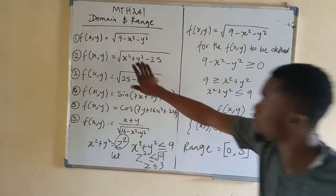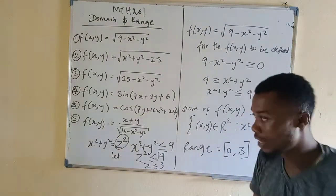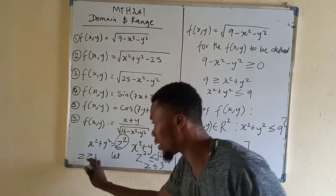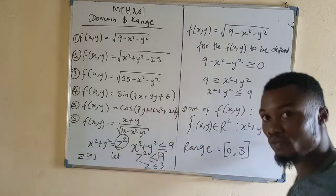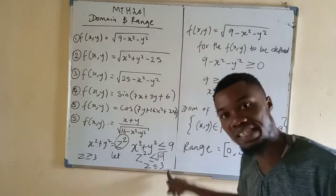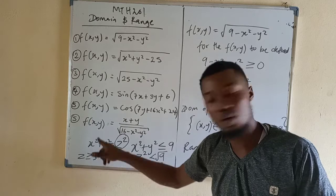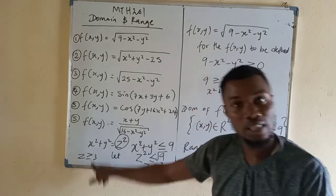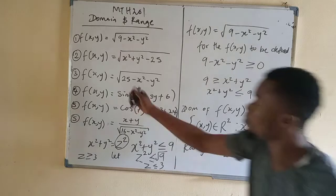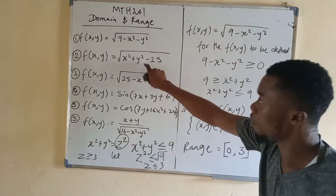The reason I stopped at 3 is because z is less than or equal to 3 — so it is 3 or less than 3. If it had been greater than or equal to 3, it would tend towards positive infinity. But here it is less than or equal to 3, so we stop at 3. Now let us solve question number 2.